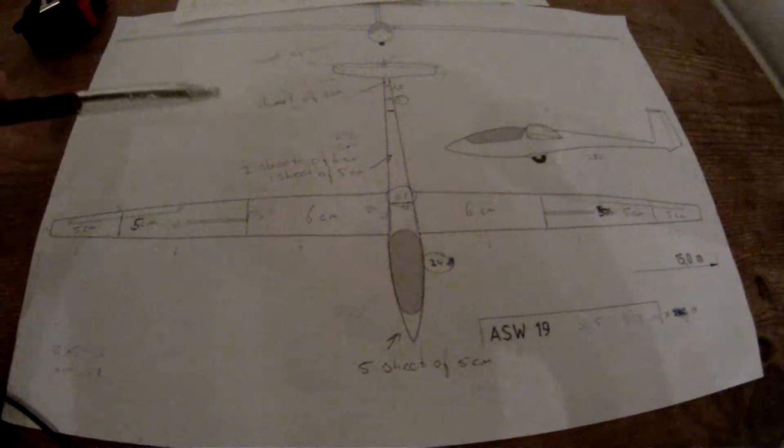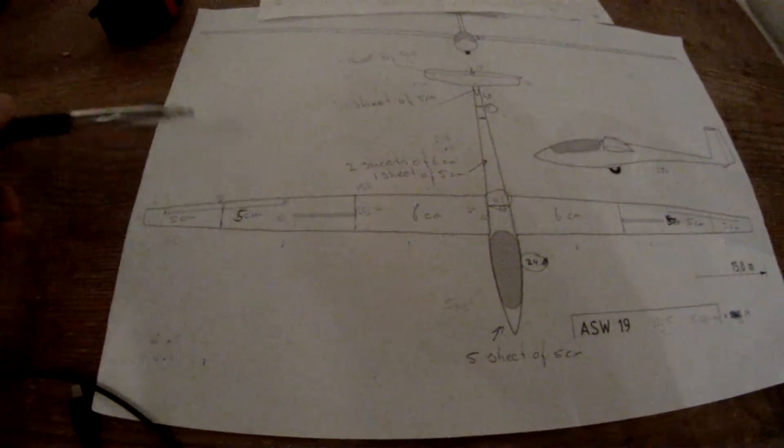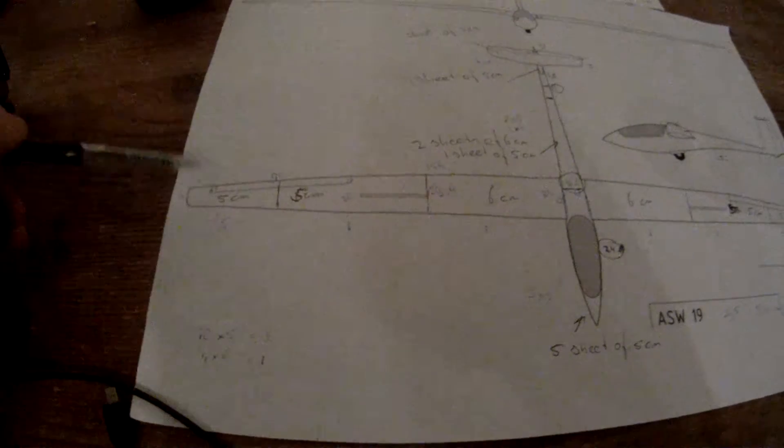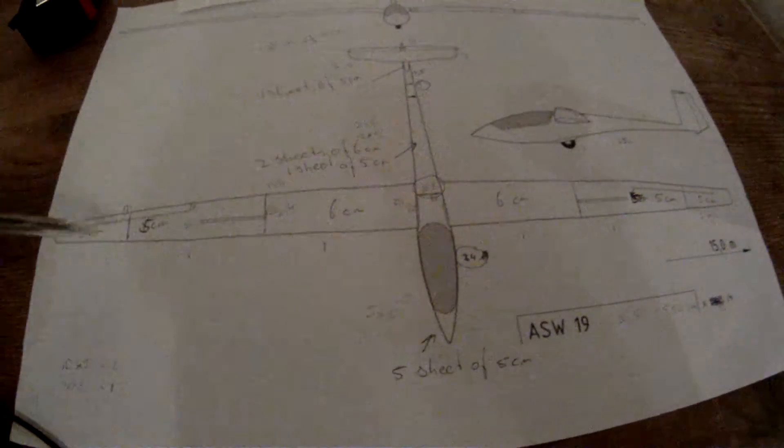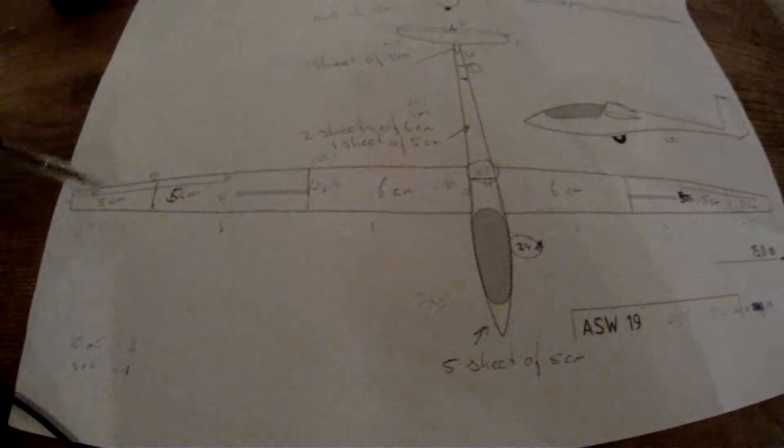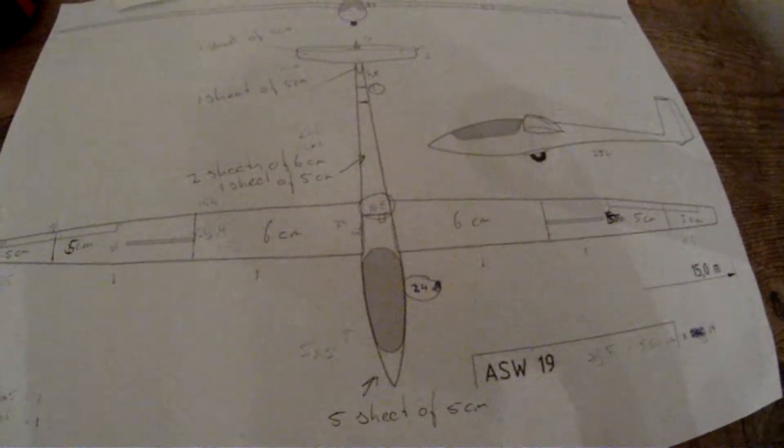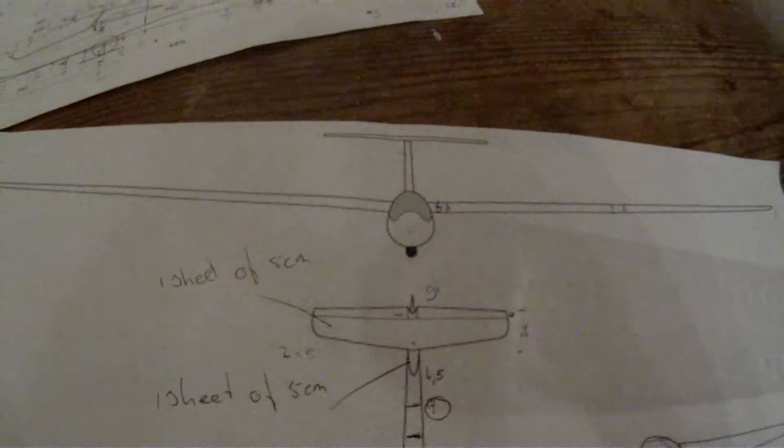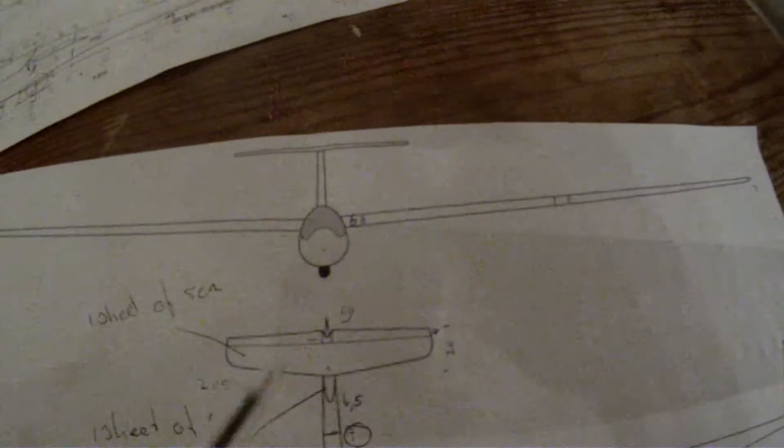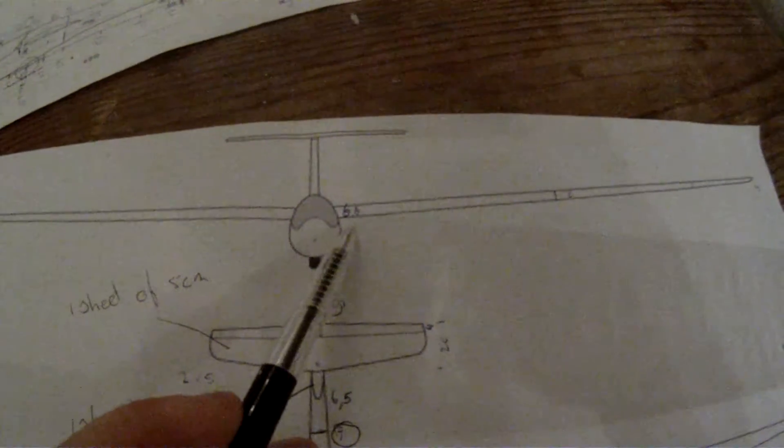So here you can see six centimeters, this one needs to be five centimeters, and the tip also needs to be five centimeters. So the wings are very easy - it's just 5, 5, 6, 6, 5, 5 centimeters. It's also very easy here, you just measure how thick the wing has to be. Well, it's about 5.6 centimeters.